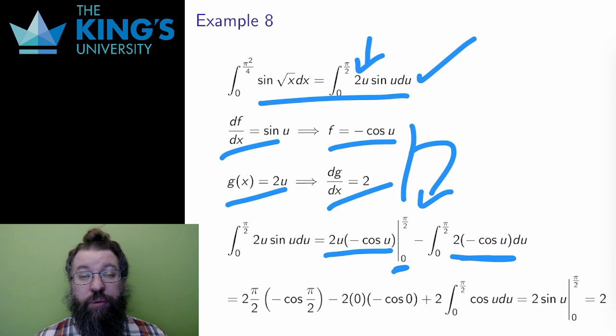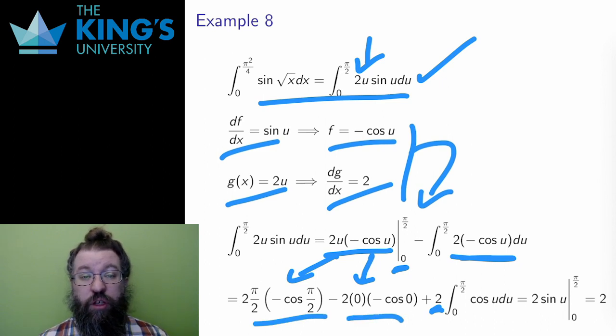I do the evaluation on the bounds, and I pull negative two out of the integral. Both of these two terms are zero. Cos of pi over two is zero, and the second is simply multiplied by zero, so only the integral is left out of these terms.